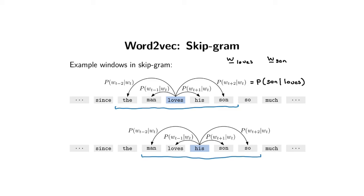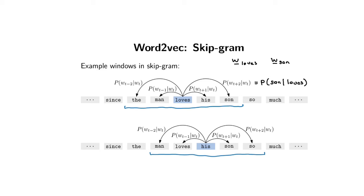Skipgram makes three crucial assumptions. The first is that each of these windows are identically and independently distributed — IID samples. The IID assumption says each window can be treated as an independent input-output sample, where the input is the center word and the output are the surrounding context words. This assumption is actually wrong, because there's clearly a relationship between windows, but it's a useful assumption we often make in machine learning.